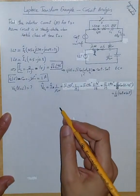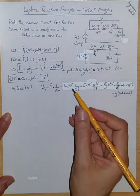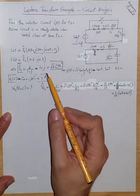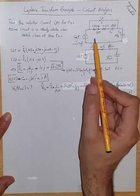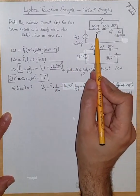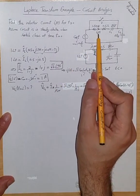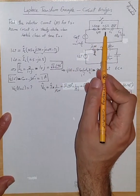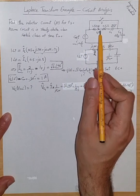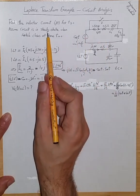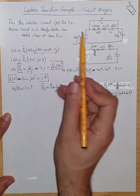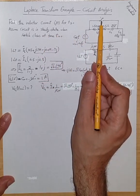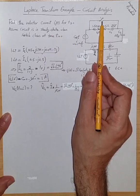Laplace transform example: circuit analysis. We want to find the inductor current IL(t) for t greater than or equal to zero in this circuit. We assume the circuit is in sinusoidal steady state right before the closure of this switch at time zero.